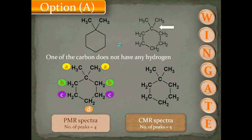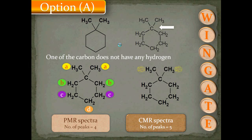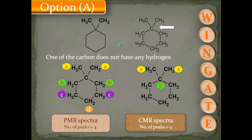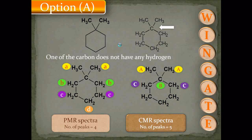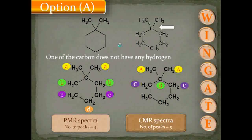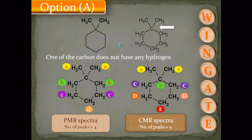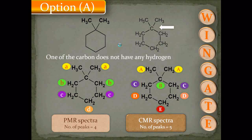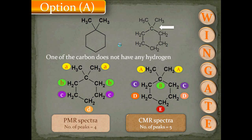The CMR spectra for the same molecule shows 5 peaks: carbon A is the side chain carbon, carbon B is attached to the side chain, carbons C are ortho to the side chain, carbons D are meta to the side chain, and carbons E are para to the side chain — total 5 CMR signals. So option A is false because it gives different numbers of PMR and CMR signals.